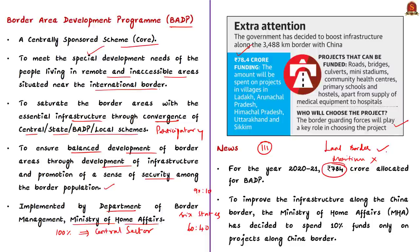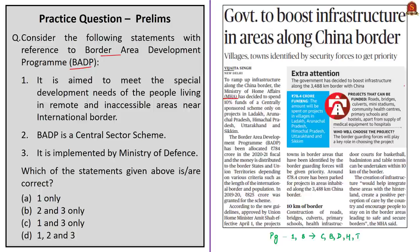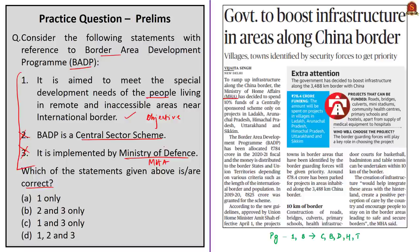Projects identified by border guarding forces will be given priority, assuming significance in the context of the ongoing confrontation along the Line of Actual Control. Funds will be utilized for construction of roads, bridges, primary schools, health infrastructure, and irrigation works — a win-win for security forces and border communities. For the BADP practice question: Statement 1 (special developmental needs of border people) is correct. Statement 2 (central sector scheme) and Statement 3 (implemented by Ministry of Defence) are both incorrect. The correct answer is option A — 1 only.